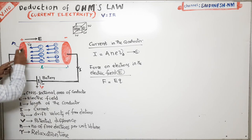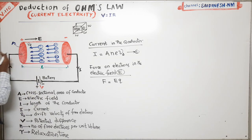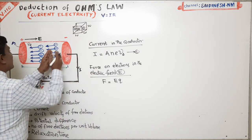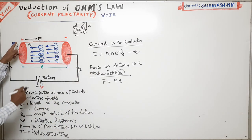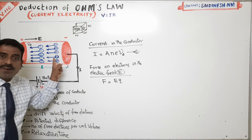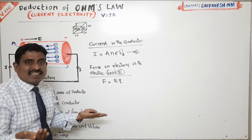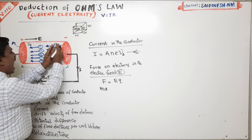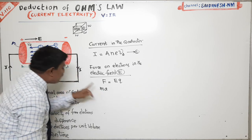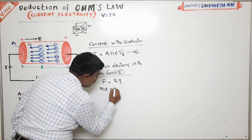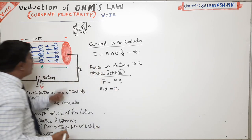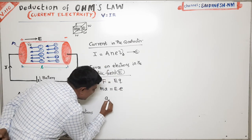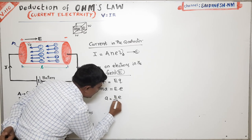Due to the attraction from the positive end, the velocity of electrons increases — there is a change in velocity with respect to time. The rate of change of velocity is acceleration. These electrons are accelerated toward the positive end. We know the formula F equals MA, where A is acceleration and m is mass of the electron. So A equals eE/m — this is equation number 2, where A represents the acceleration of free electrons inside the conductor.